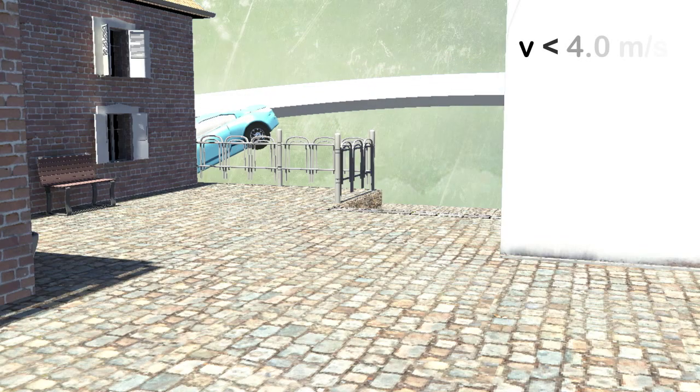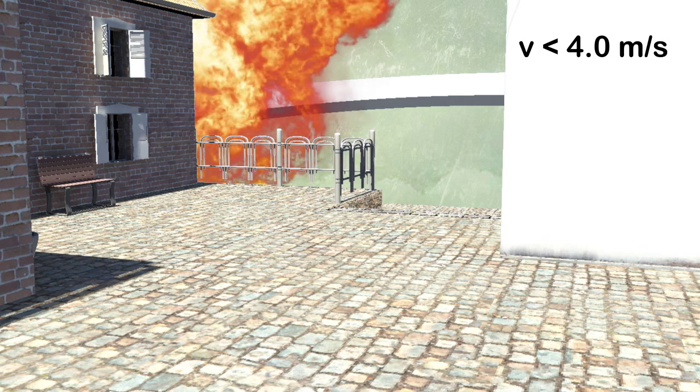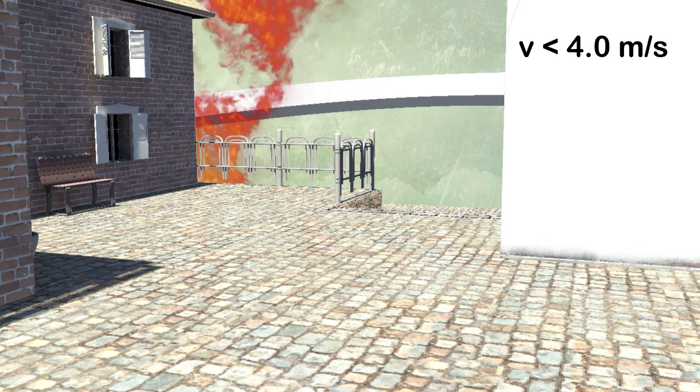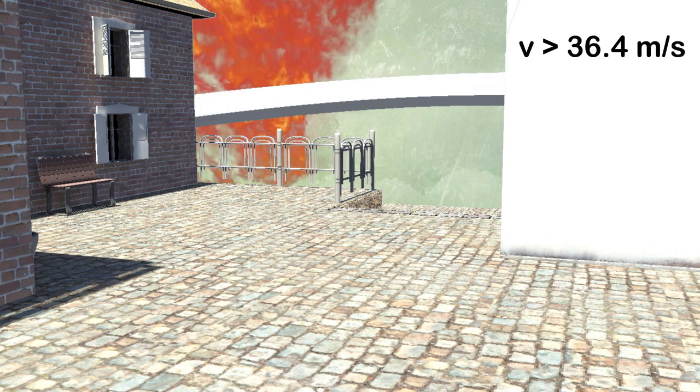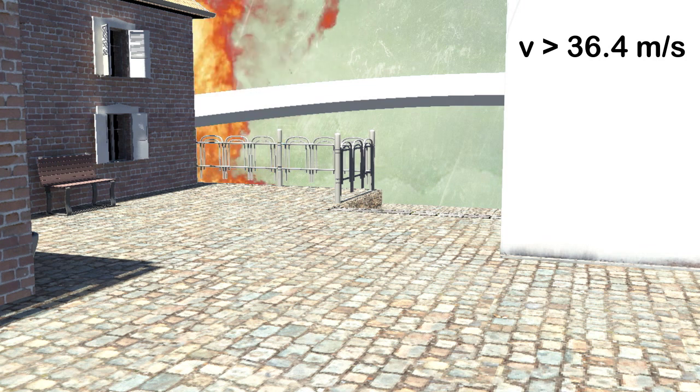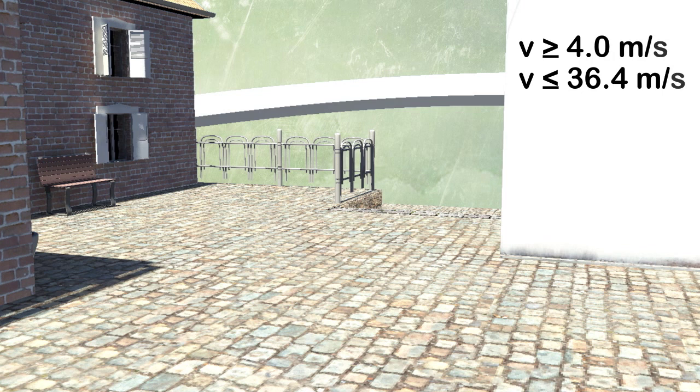So we know that at speeds of less than 4 meters per second, the car falls into the center of the turn. At speeds greater than 36.4 meters per second, the car flies off the road. And at speeds in between these values, the car makes it safely around the turn without exploding.